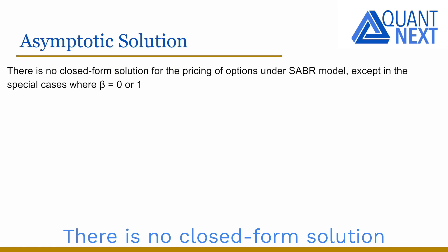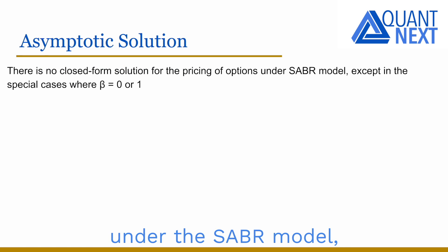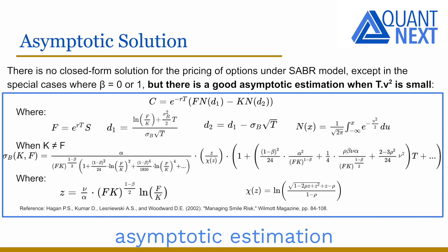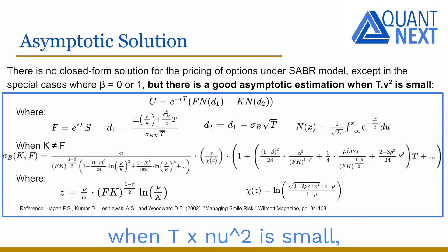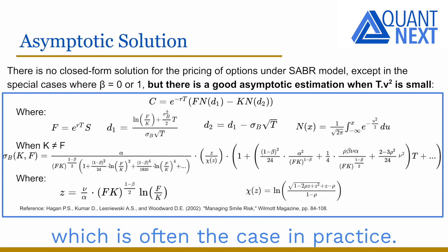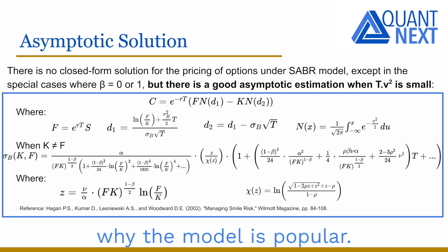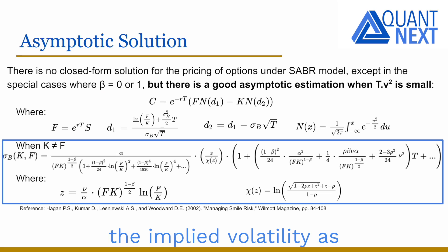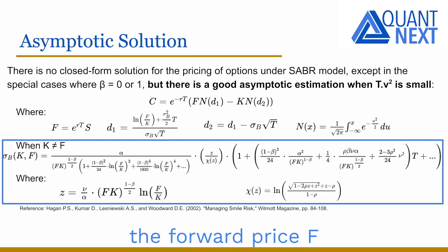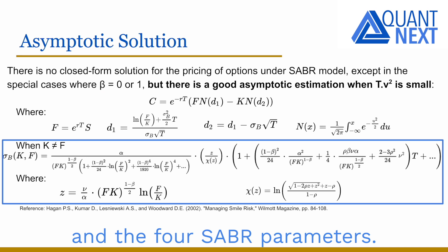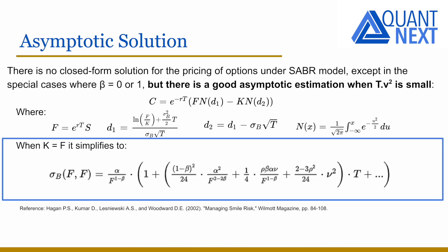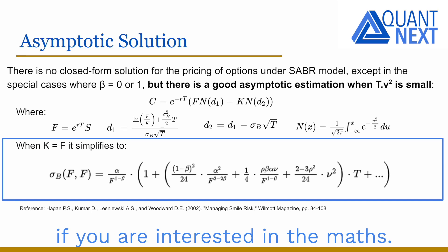There is no closed-form solution for the pricing of options under the SABR model, except in the special cases where beta equals zero or one. But there is a good asymptotic approximation when T times the square of nu is small, which is often the case in practice — this is one of the reasons explaining why the model is popular. We find the Black-Scholes formula with an expression of the implied volatility as a function of the strike price K, the forward price F, and the four SABR parameters. When K equals F and the option is at-the-money, the expression simplifies. You will find the derivation of this asymptotic approximation in the reference paper from Hagan et al. if you are interested in the mathematics.